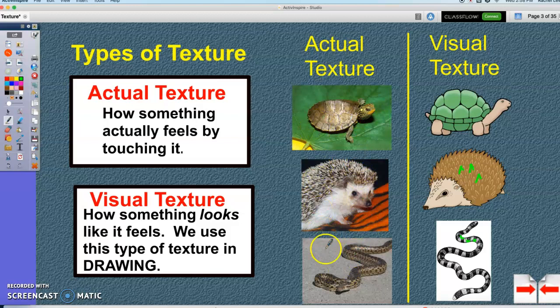Actual texture is how something feels if you actually touched it. But visual texture is how something looks. So when you're drawing an object, you want to add visual texture.